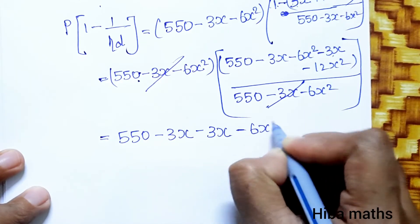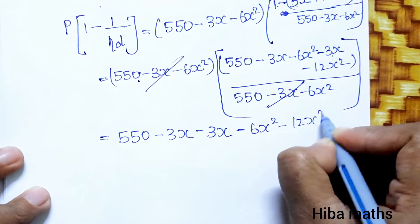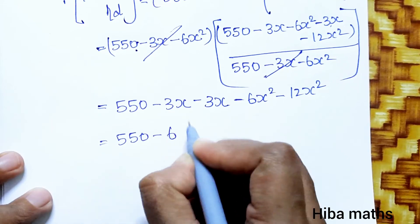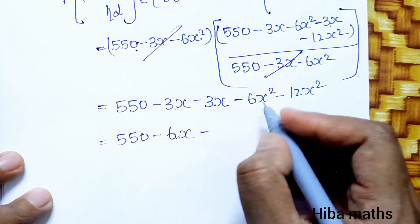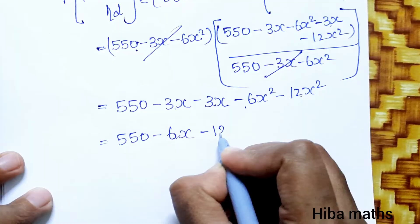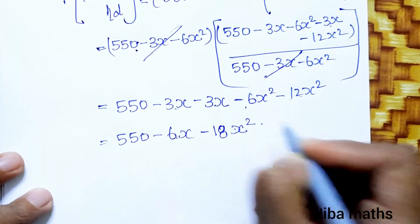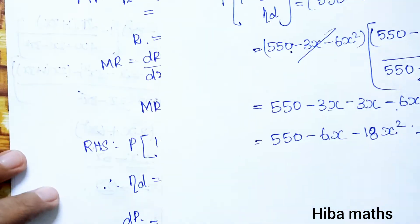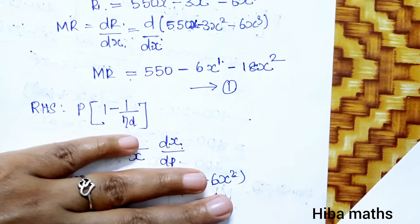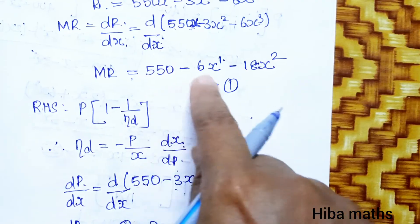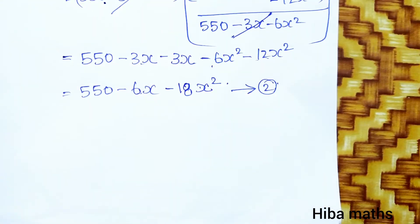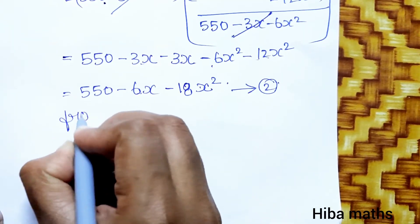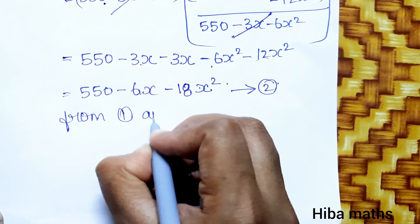Minus 3x and minus 3x combine to minus 6x. Minus 6x square minus 12x square gives minus 18x square. So we get 550 minus 6x minus 18x square. This is the second result. The first result was also 550 minus 6x minus 18x square.